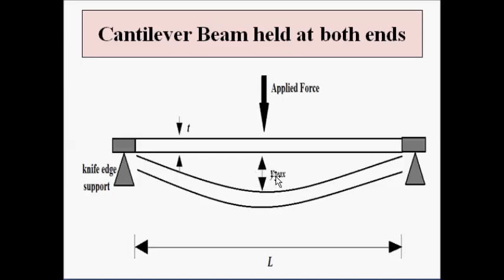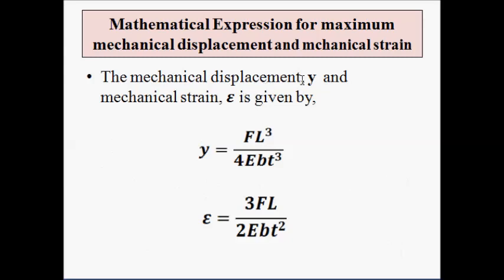By measuring this displacement, we can get a relationship between the applied force, the displacement, and the mechanical strain induced. Both ends of the beam are held stationary with a knife-edge support or any other type of support, and the force is applied in the middle, causing bending and a certain mechanical displacement which is directly related to the applied force. The mathematical expression relating displacement Y and mechanical strain epsilon with the force is given by Y = FL³ / (4EBT³).